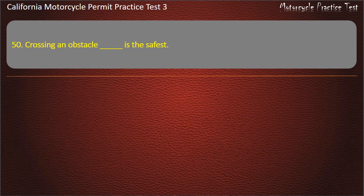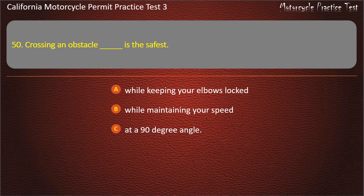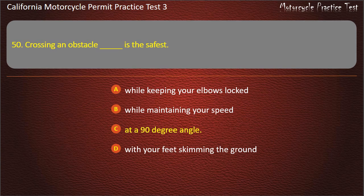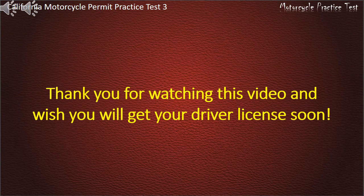Question 50. Crossing an obstacle is the safest: while keeping your elbows locked, while maintaining your speed, at a 90 degree angle, or with your feet skimming the ground. Answer: At a 90 degree angle. Thank you for watching the video and we wish you will get your driver's license soon.